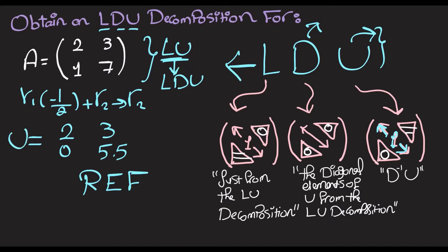And to find L, L is going to have ones along the diagonal, a zero here, and this element is just going to be the negative of the multiple used to obtain this zero.